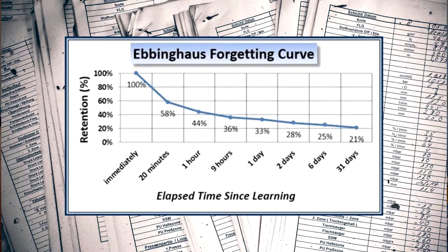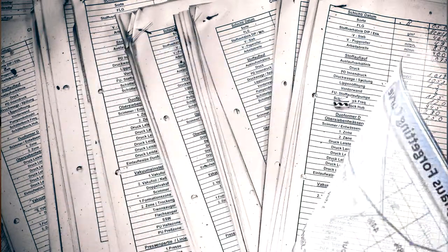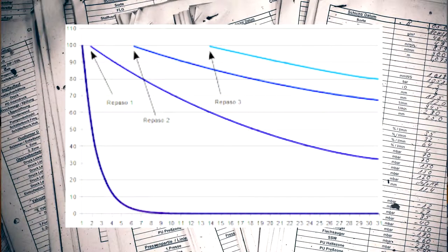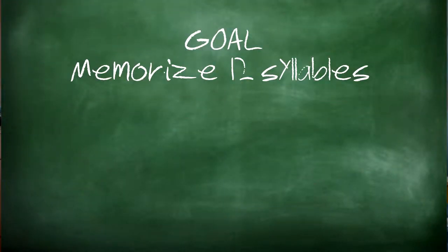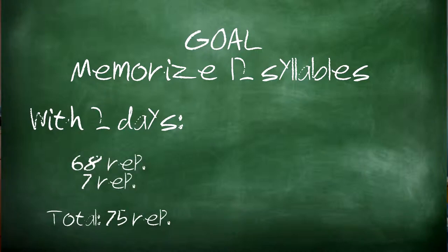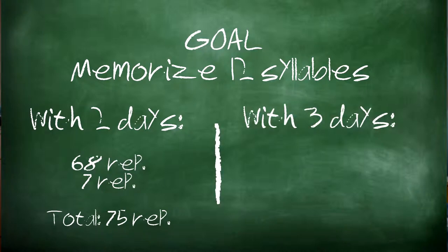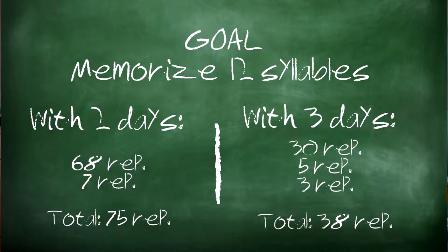The forgetting curve describes how memory decreases over time. He also discovered that by spacing the memorization of the syllables, he needed fewer repetitions to remember them. For example, it took him 68 repetitions on one day and then 7 repetitions the next day to memorize one list of 12 syllables. But by spacing out the memorization with just one more day, he found he could achieve the same memorization in just 38 repetitions.